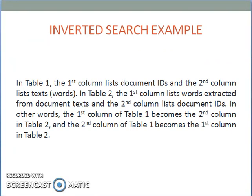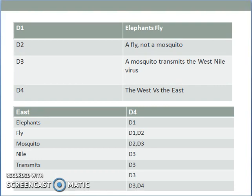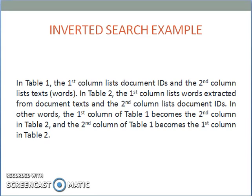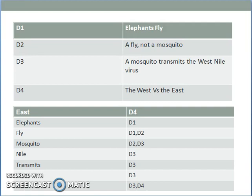Now let's see an example. The first table shows four documents: D1, D2, D3, and D4. The second table shows the occurrences of all the words in each document. In table 1, the first column lists document IDs and the second column lists the text. In table 2, the first column lists the word extracted from the document text and the second column lists the document IDs. The first column of table 1 becomes the second column of table 2, and vice versa. This shows that the words in the second table are ordered alphabetically — which is lexicographic indexing, otherwise known as inverted files — and the second column acts as a pointer to the document where the word occurs.